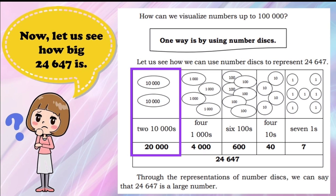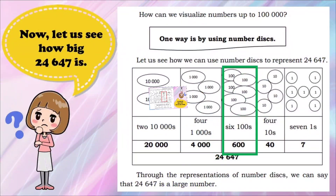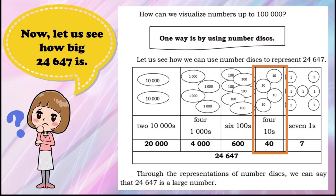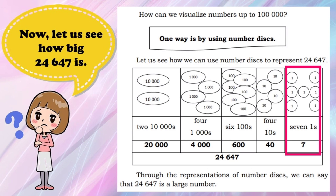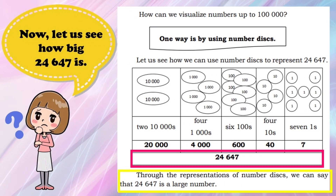Let us see how we can use number disks to represent 24,647. The 10,000s place has a value of 20,000, represented by two disks as shown in the table. The 1,000s place has a value of 4,000; four disks are used. The 100s place has a value of 600; six disks are used. The 10s place has a value of 40; four disks are used. The 1s place has a value of 7; seven disks are used. Through the representations of number disks, we can say that 24,647 is a large number.